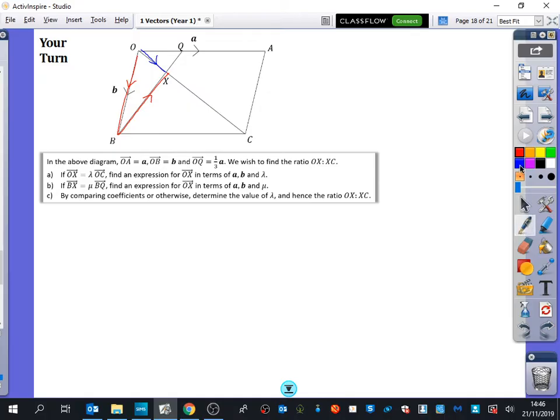We are going to do the same strategy as before. Although it's asking us to do some other things, it looks like it's more confusing. It is still wanting us to find out OX in two different ways. The extra thing that it's told me about this diagram is that to go from O to Q is a third of A. So it's a third of the whole way across.